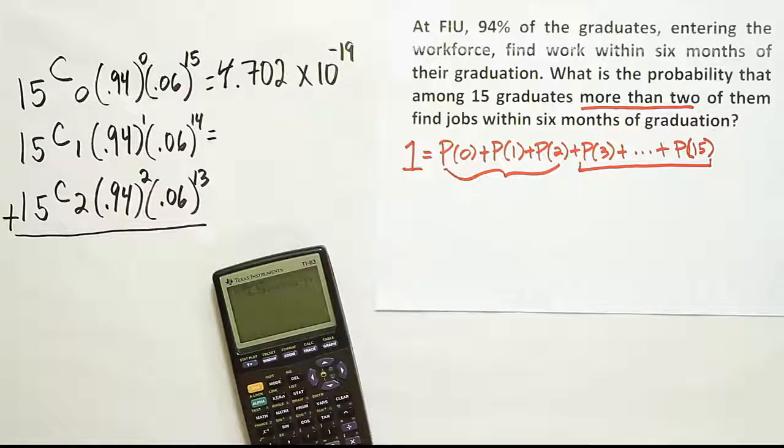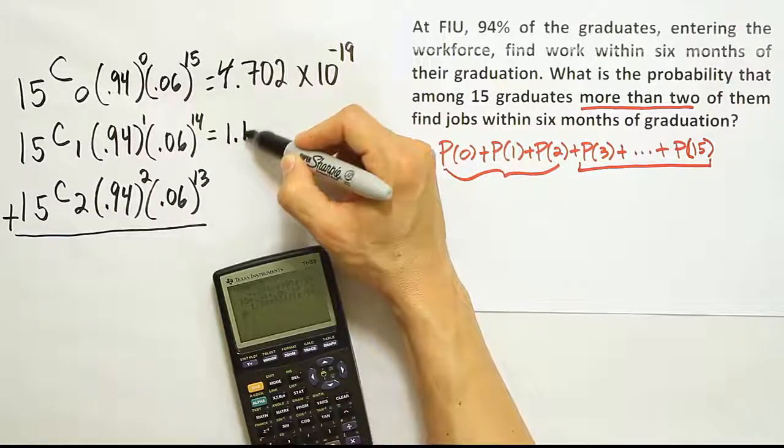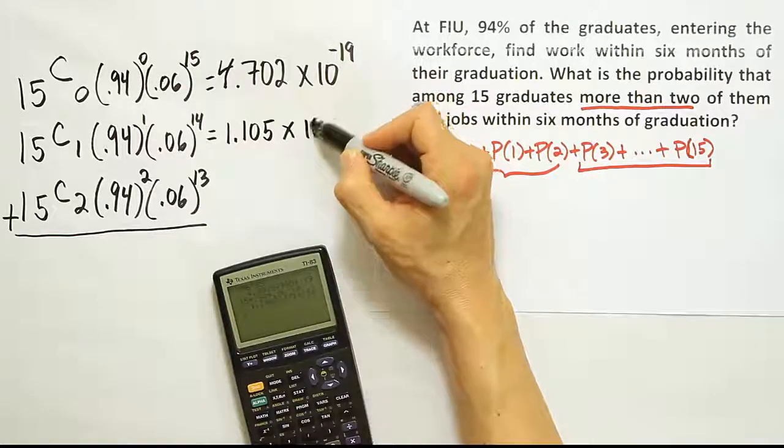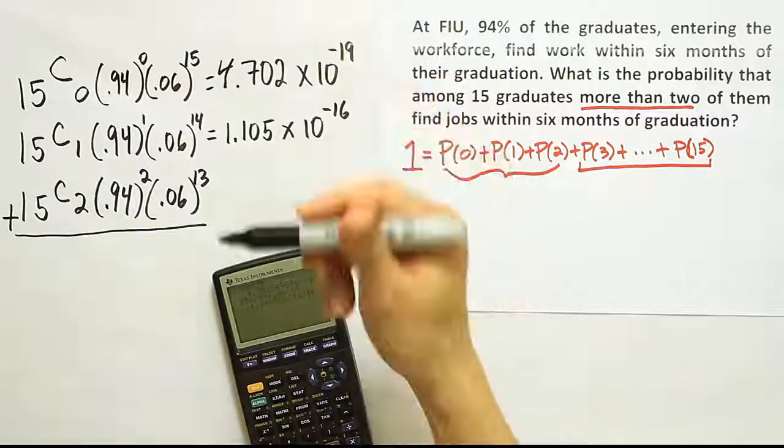Let's do the next one. 15 choose one. Well, there's actually 15 ways to do that. So we can do 15 times 0.94 times 0.06 to the 14th power. And again, we get a really small number. We get 1.105, but again, that's times 10 to the minus 16th power. Now there will be 15 zeros before we get to the digits. 15 digits. Again, even if we round off to any reasonable round off place, that's basically zero. So we can pretty much consider these zero.